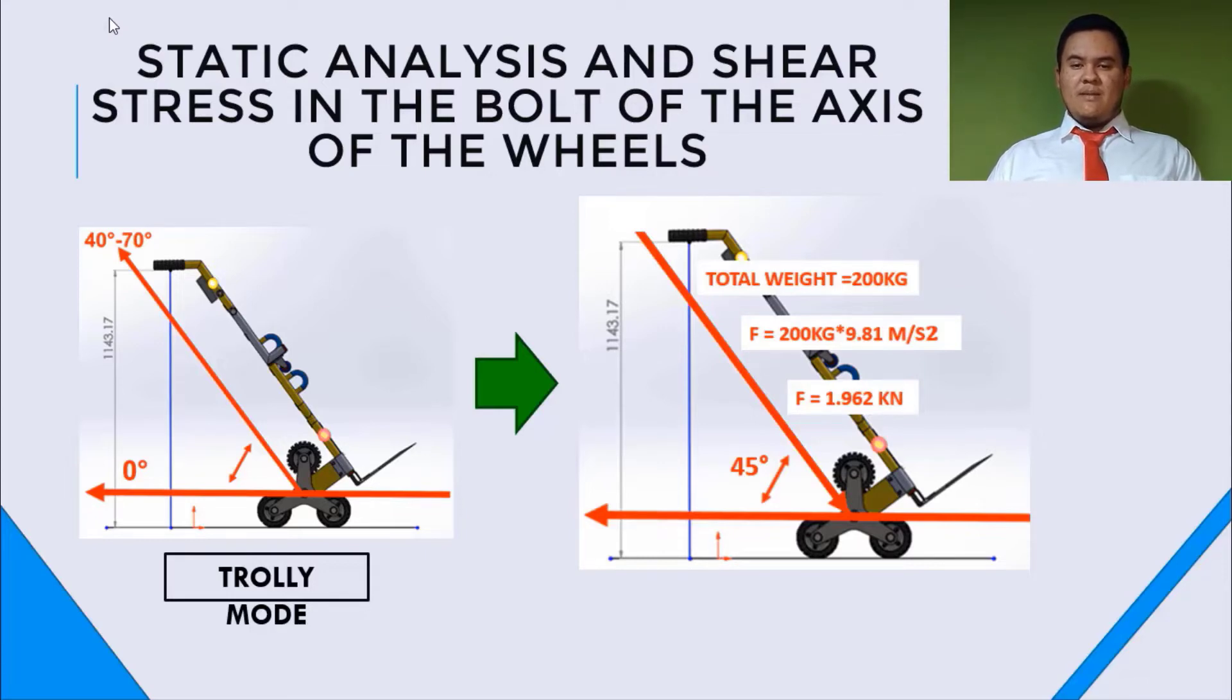We need to calculate the shear force in the vault, the principal vault, so we can select this vault and the material for this. And the real force that is applied in this vault depending of the degree of inclination. In this case, the trolley is designed to be used in the range of 40 and 70 degrees. But the normal degree of operation is 45. So the real force in this part is not the same as it is in the car mode.